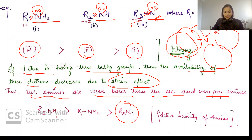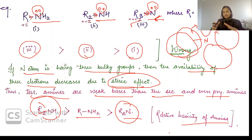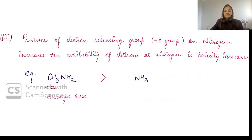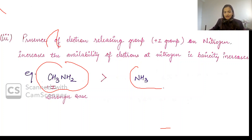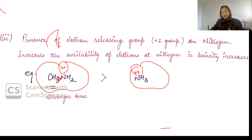Because of the steric factor, secondary amine will be more basic — because here we have two alkyl groups increasing electron density but the steric hindrance is not excessive. Then primary amine, then tertiary amine. This is the relative basicity of the amines. But if you compare an amine with ammonia, amines will be more basic than ammonia because amines have an alkyl group increasing electron density via the plus-I effect.